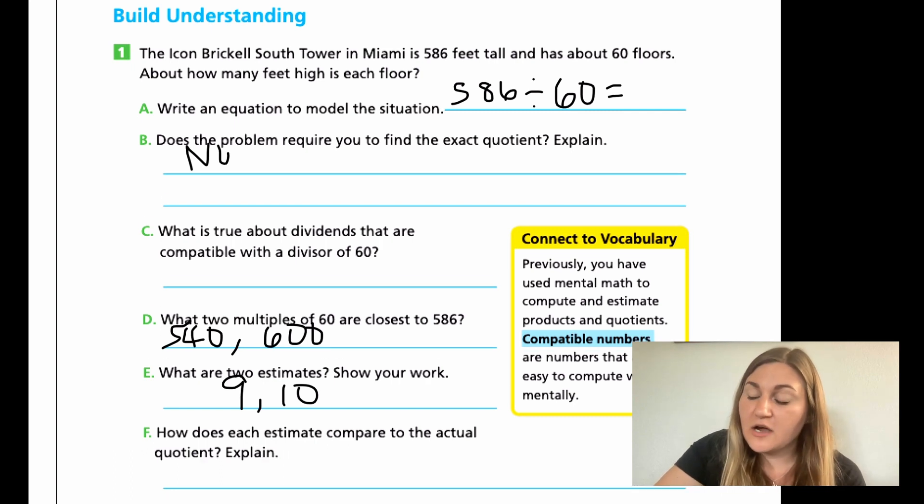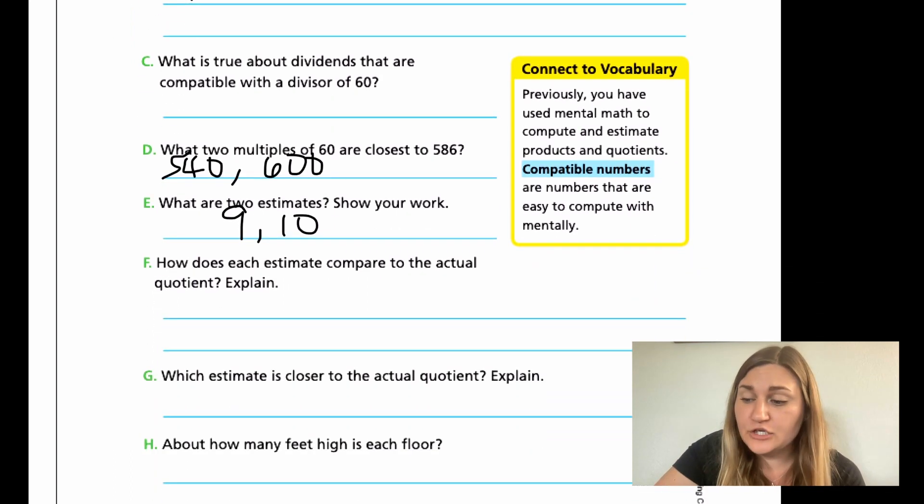And then finishing off the problem F, G, and H. F, how does each estimate compare to the actual quotient? G, which estimate is closer to the actual quotient? And H, about how many feet high is each floor? Go ahead and do those three.